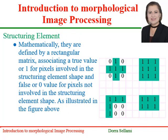Mathematically, all shapes of structuring elements can be defined by a rectangular matrix associating a true value or one for pixels involved in the structuring element shape, and false or zero value for pixels not involved in the structuring element shape. As illustrated in the figure above, we define the different matrices corresponding to the different structuring elements considered in the preceding slide.